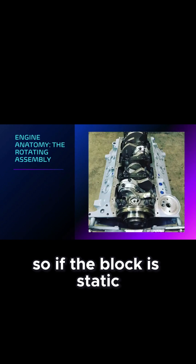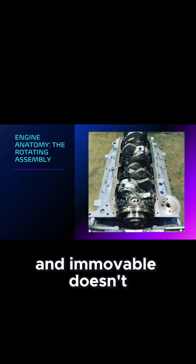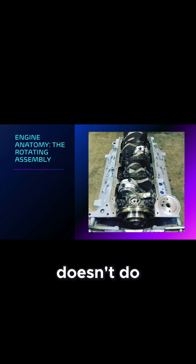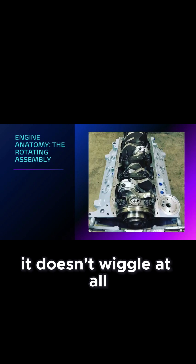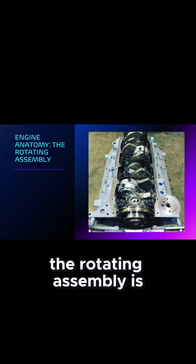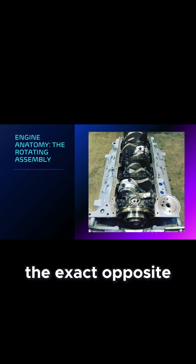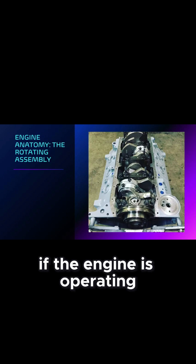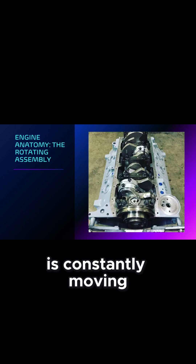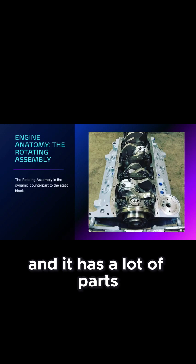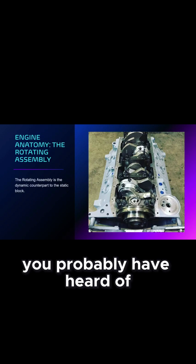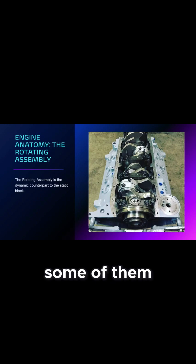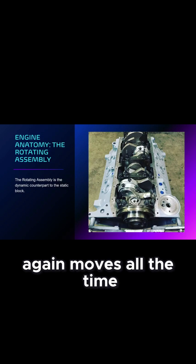If the block is static and immovable — it doesn't wiggle at all — the rotating assembly is the exact opposite. If the engine is operating, the rotating assembly is constantly moving, and it has a lot of parts that you've probably heard of. Let's go through some of them.